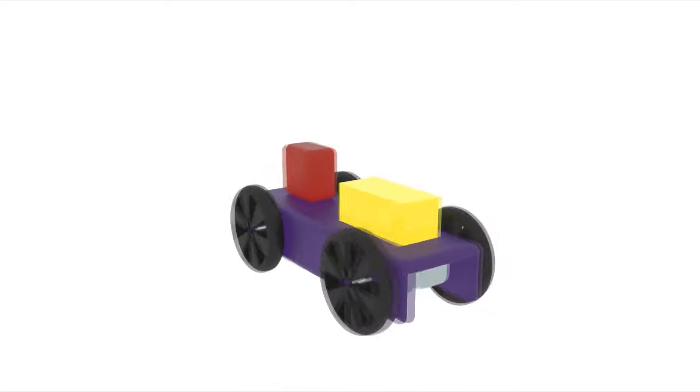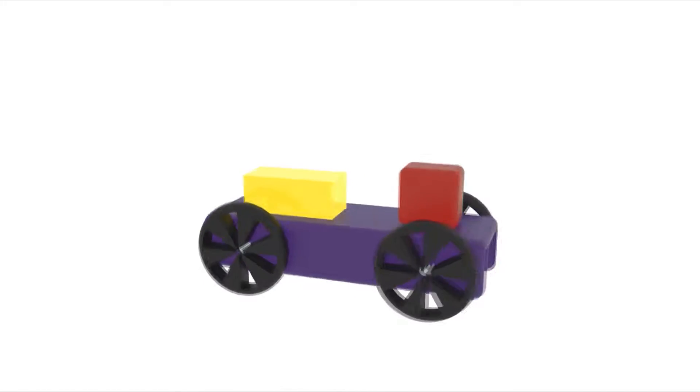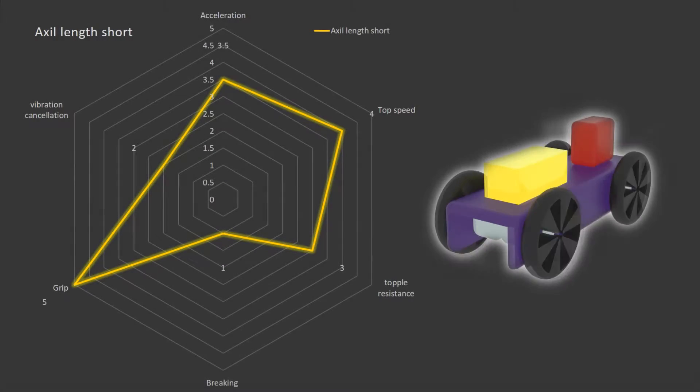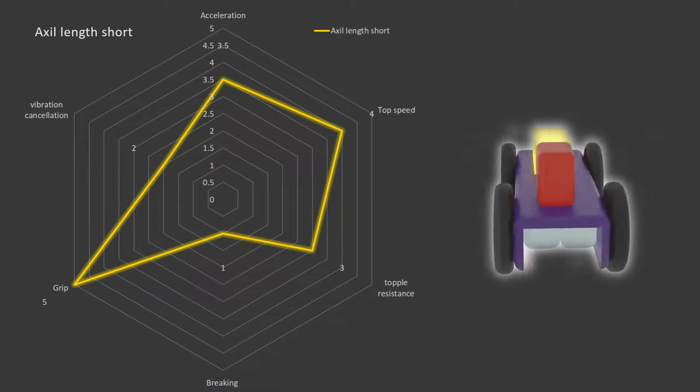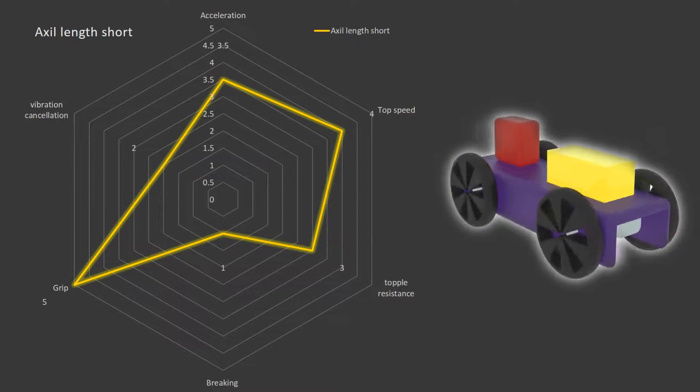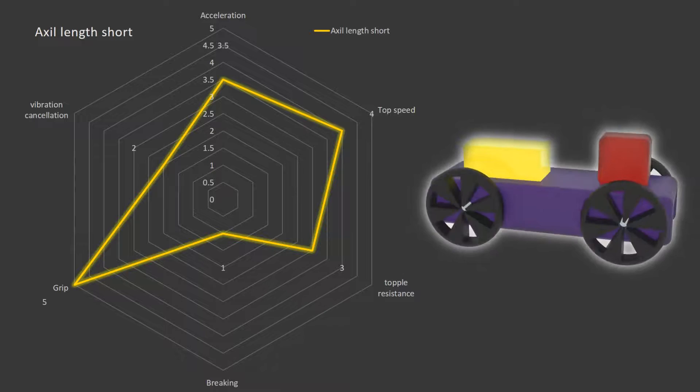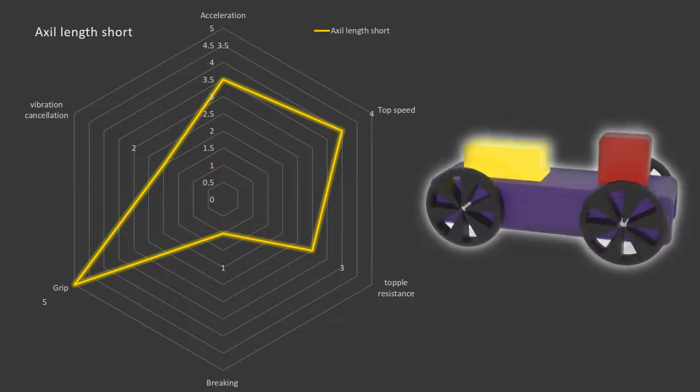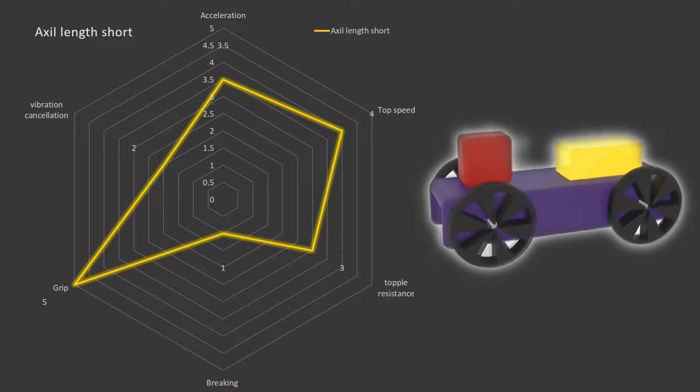Now next in our list is a robot which has wheels very close to the chassis. This kind of robot gets an advantage over grip. They get maximum grip out of all the types of robot. Toppling resistance, top speed, and acceleration is not much affected. But vibration cancellation is less.